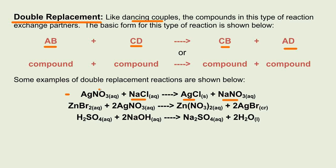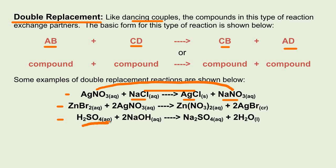The ions just switch places — NO3 ends up over here, and Cl ends up over here. The next two reactions are very similar. We have sulfuric acid combining with sodium hydroxide to form sodium sulfate and water, and it's simply the ions switching places.